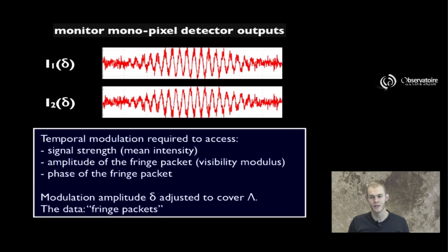In order to see the entire coherence envelope using one such technique, you need to make sure that the amplitude of the modulation you do using your piezo mirror is of the order of magnitude of that coherence length. The data you're left with is something that we call fringe packets, and the interpretation of those fringe packets is going to be the object of future modules here.